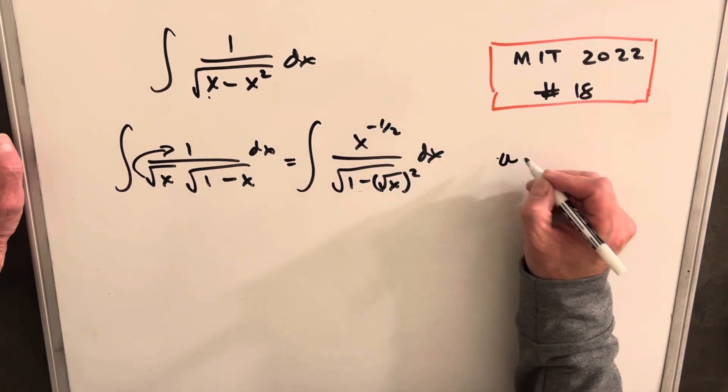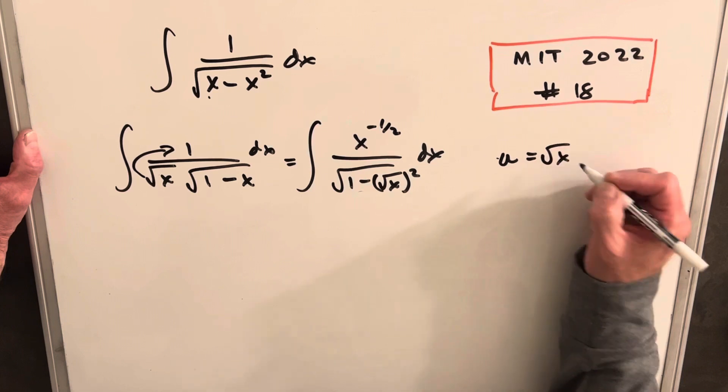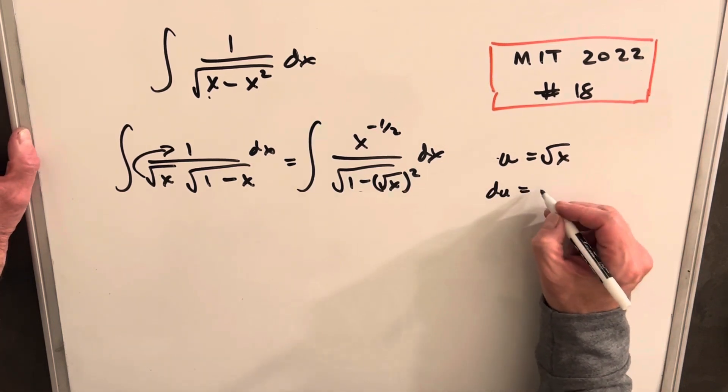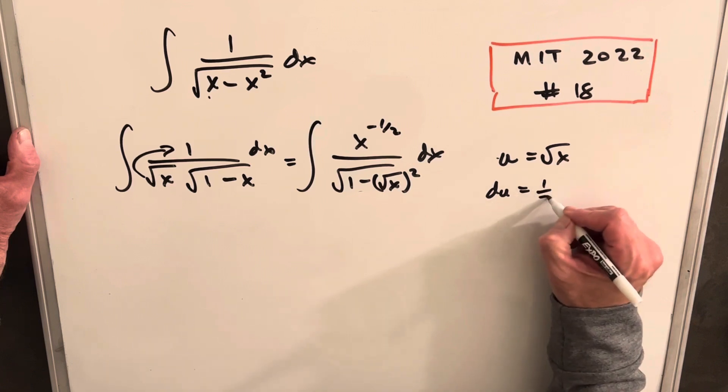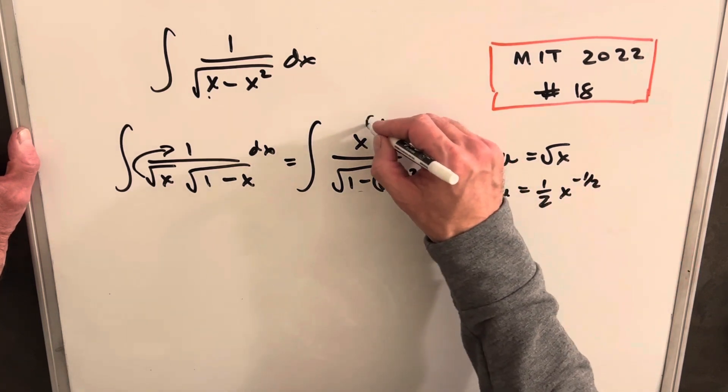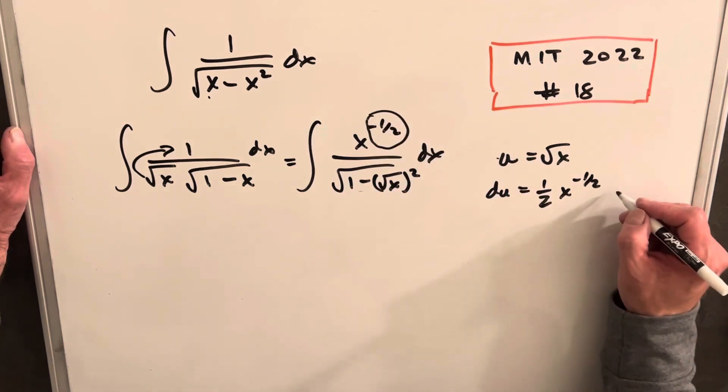So then what we'll do is for our u substitution, let's make u equal to the square root of x. And then we'll take our derivative, and that's just going to be du equals a half x minus a half. And there we generate the half power that we wanted dx.